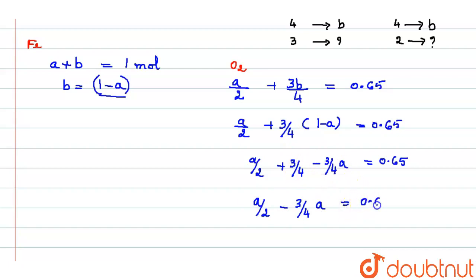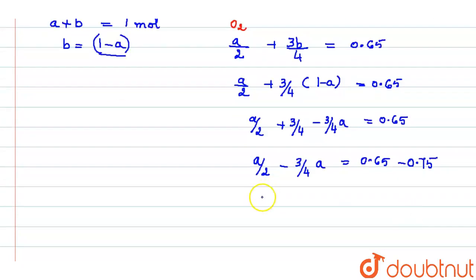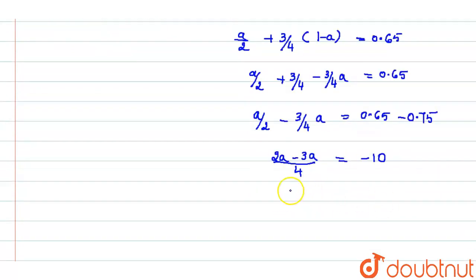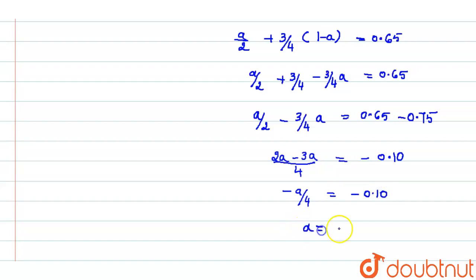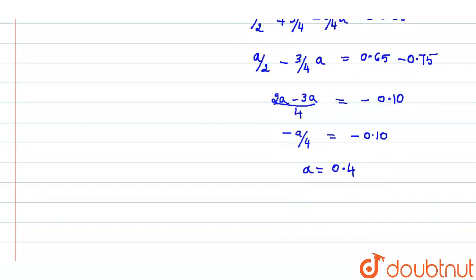So −a/4 = −0.10. The negatives cancel, giving a = 0.4. Applying this to a + b = 1: if a is 0.4, then b = 1 − 0.4 = 0.6. We now have the values of a and b.